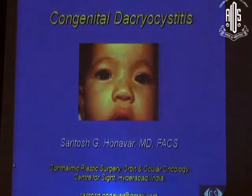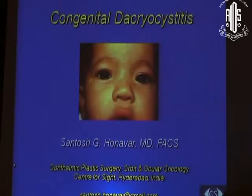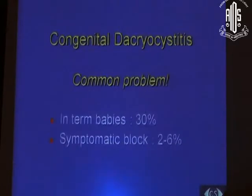The canaliculus may not be developed at all, in which case you have no solution except to do a canaliculodacryocystorhinostomy. If the canaliculus is partially developed or partially atretic, you can bypass it, vary into refines and put a tube. Beyond that, it is all dacryocystitis, which is a very common problem.